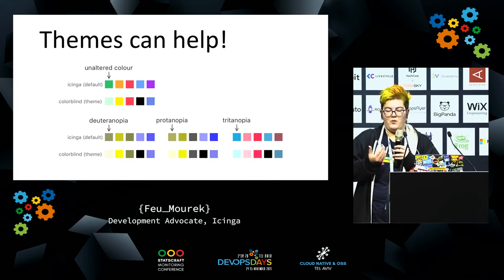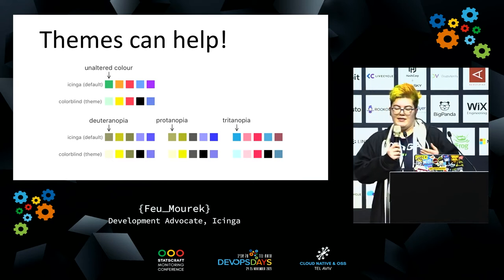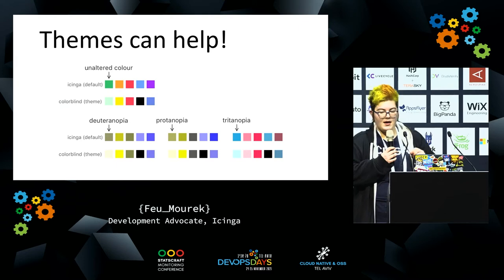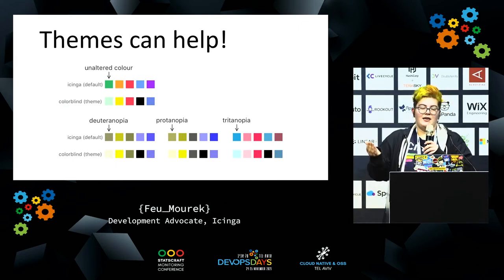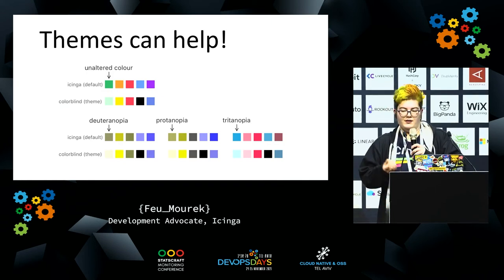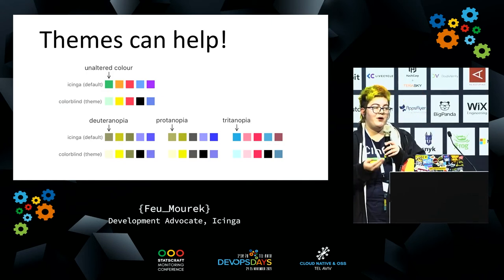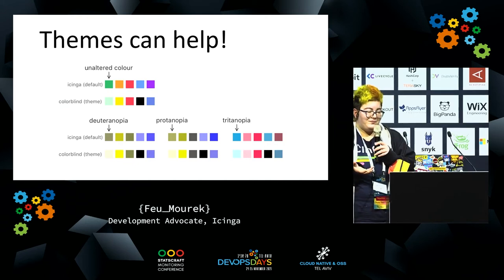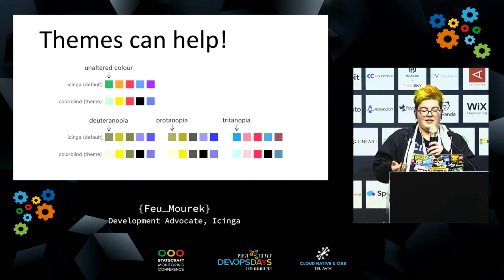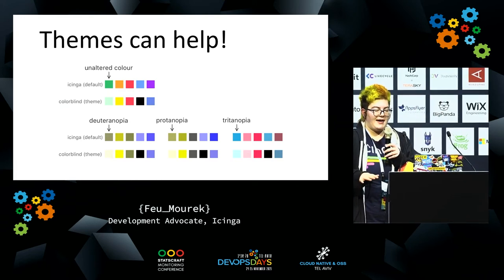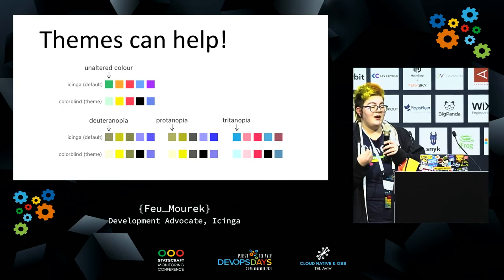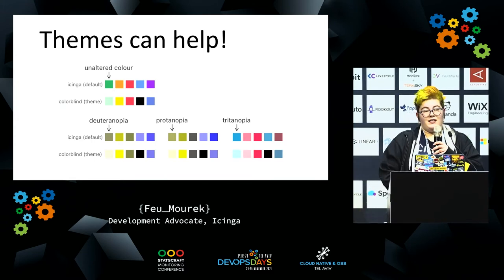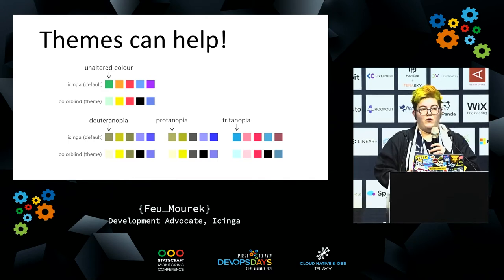One way to work around it is theming. You can see in the top we have our default colors, and below that is our colorblind theme. What we did there is make the more important colors darker. The green is not something you will be focusing on — you won't be clicking on OK states all the time. What you want to be focusing on is what's critical. So we lightened up and blended the color of the OK state more into the background, so the states that are more important pop out more just by brightness. The darker something is, the more severe it is, and the more attention you will be paying to it.